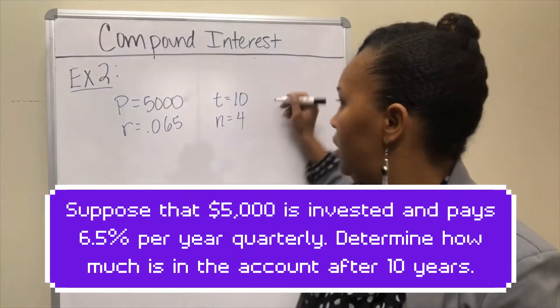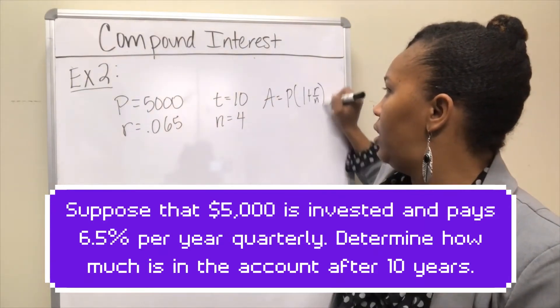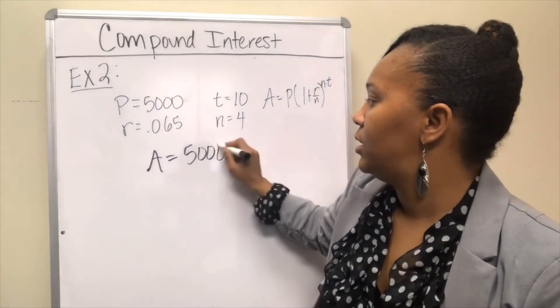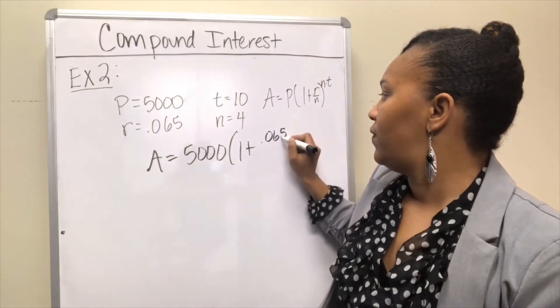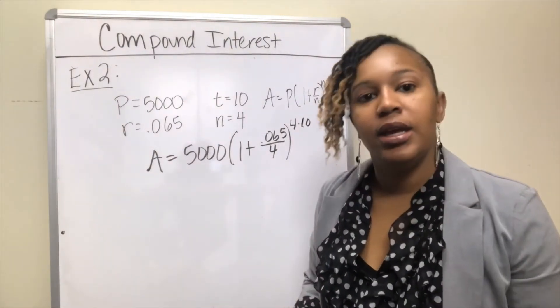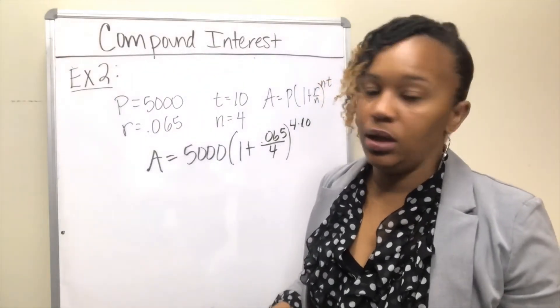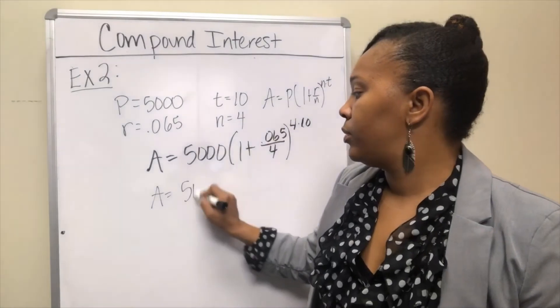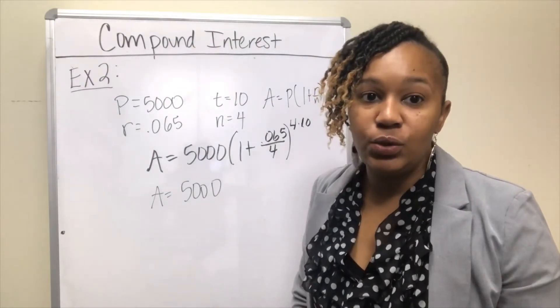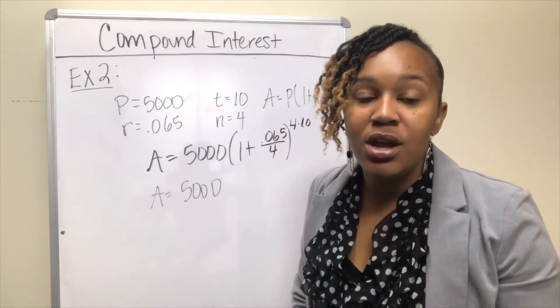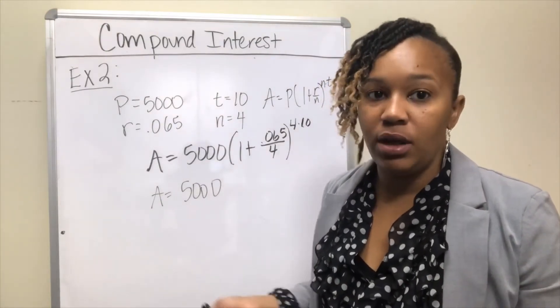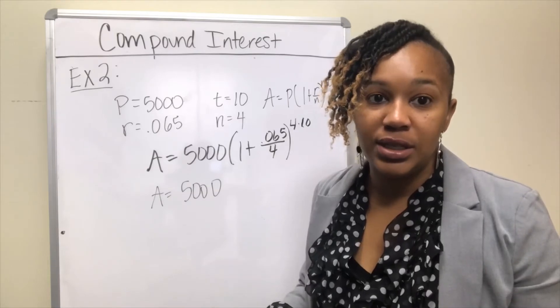We're going to plug those values in. Recall that our formula is P times 1 plus R over n raised to the n times t. So A equals 5,000 times 1 plus 0.065 all over 4 raised to the 4 times 10. Once again, it's going to be a matter of making sure you plug this in the calculator correctly. If you do one step at a time, make sure you do not round until you get to the very end. We're talking about money here, so you don't want to short people their money. Keep all of your numbers until you get to the very end. Once you get to the very end, then round it to the nearest cent.